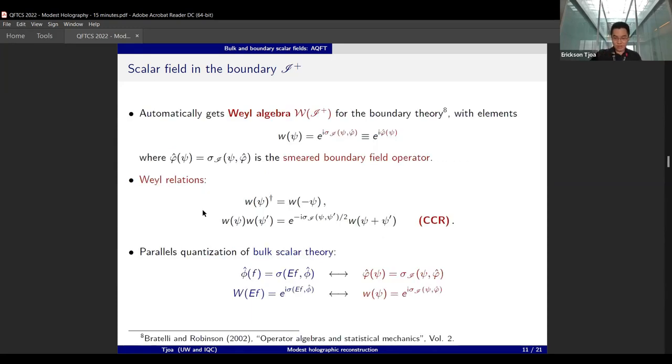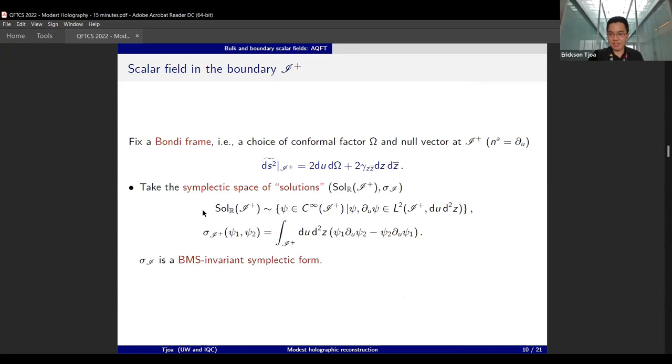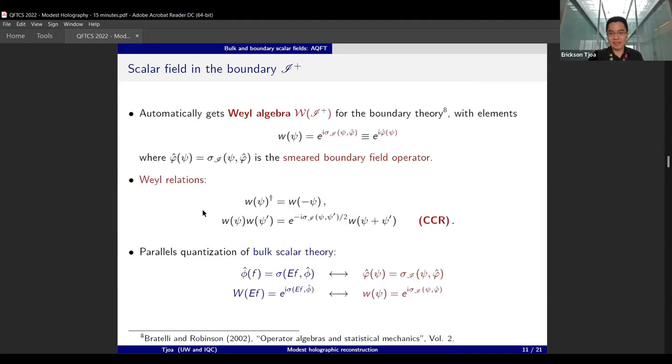Once you see that you have these two things—you have the symplectic space of solutions—then the rest just goes verbatim. You can get the Weyl algebra for the boundary theory just by using the symplectically smeared field operator, but now using the boundary version. You realize that the Weyl relationship can also be implemented and everything parallels the bulk by the following identification.